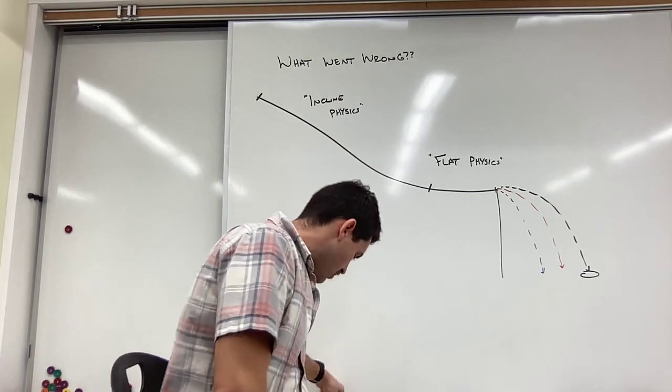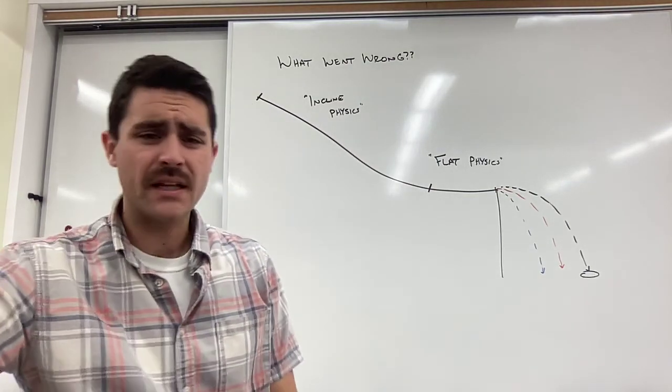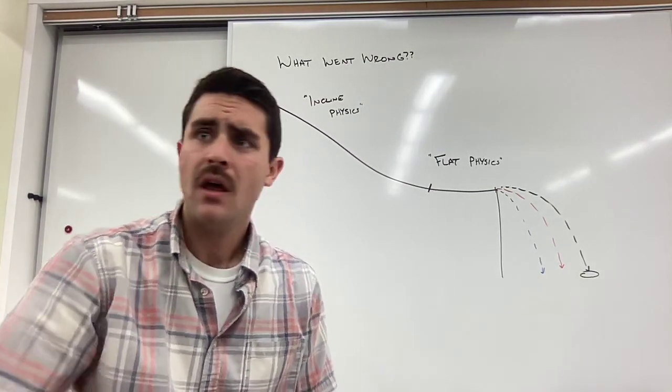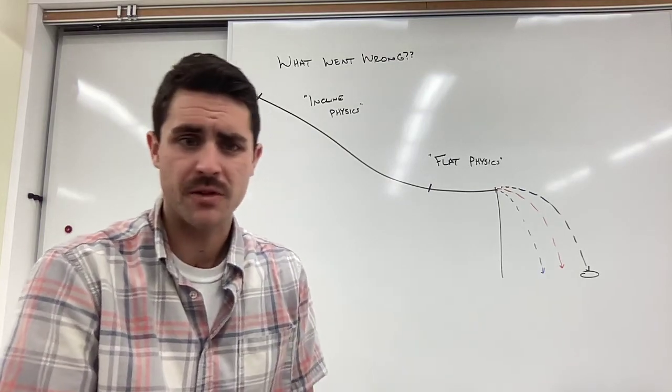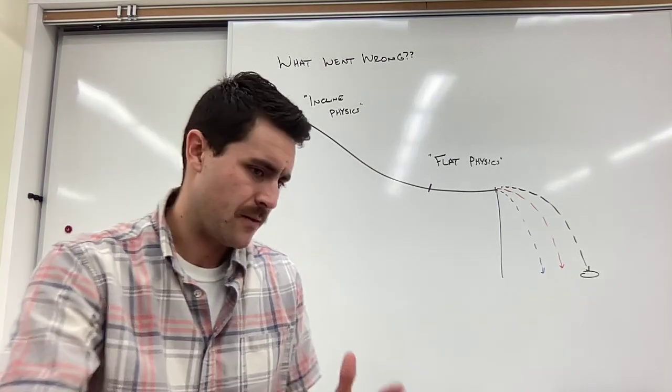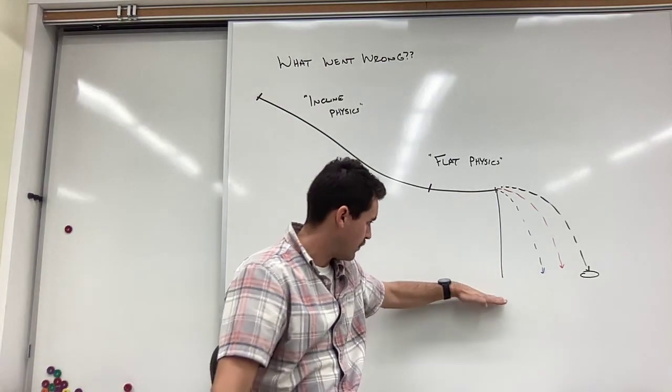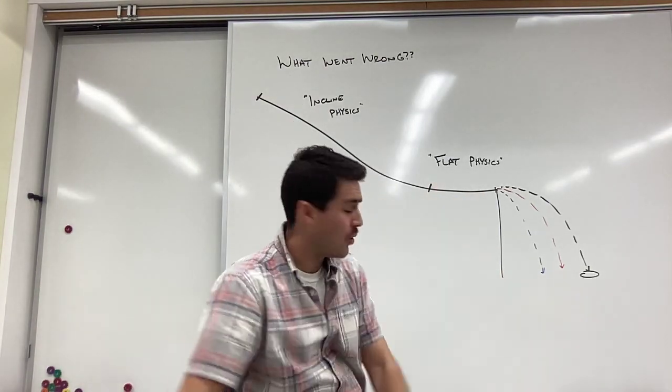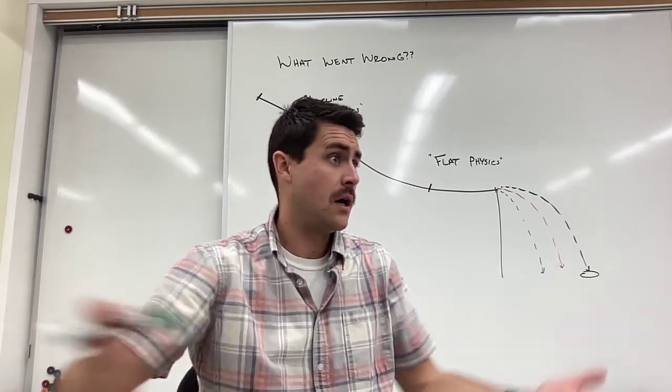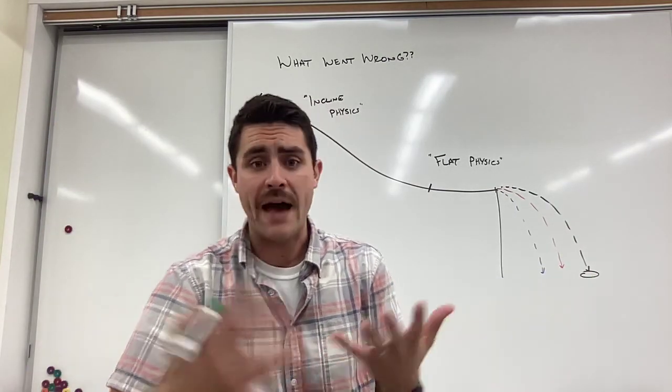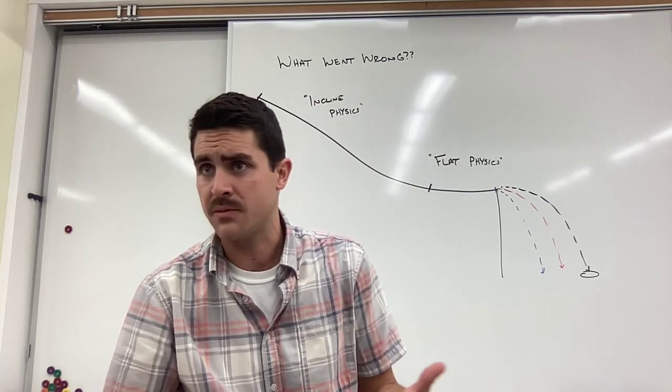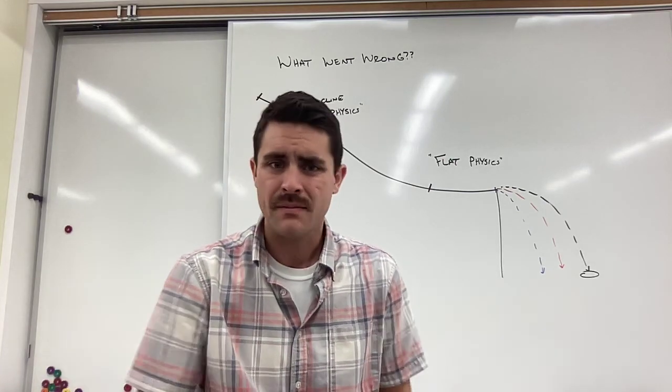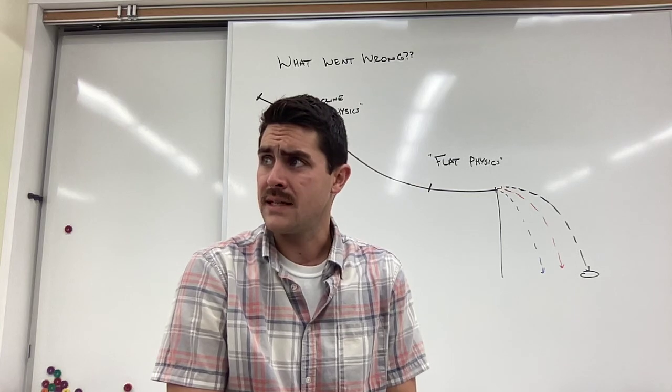But more importantly, after all that discussion, as a class we sat down and said okay, what are the issues here? Is it our measurements? Well no, we were pretty careful with our measurements. We used plumb bobs to get the vertical zero point. We measured these very well. We had a lot of coefficient of friction data and we averaged that. So there probably wasn't error, or if there was error in that measurement, it was taken care of by the averaging of that data.